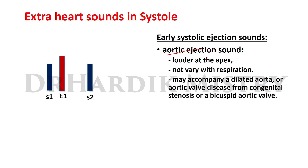Specifically, the aortic ejection sound is louder at the apex, is not significantly affected by respiration, and may accompany a dilated aorta or aortic valve disease from congenital stenosis or a bicuspid aortic valve.